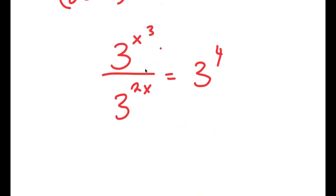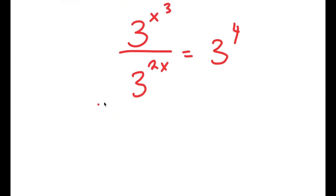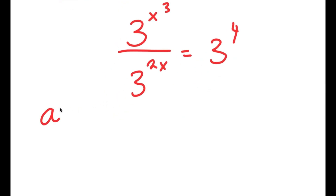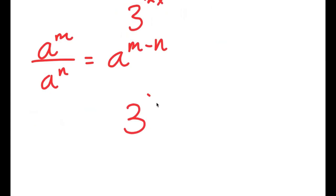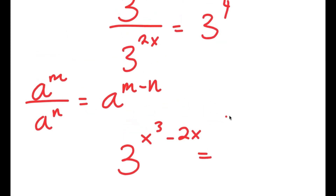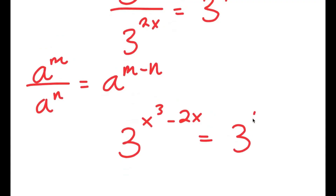Now notice how I have everything in the base of 3, so this is going to make it much easier to solve. If I have something in the form a to the power of m over a to the power of n, this is equal to a to the power of m minus n. So 3 to the power of x to the power of 3, over 3 to the power of 2x, is going to equal 3 to the power of x³ minus 2x, which is equal to 3 to the power of 4.